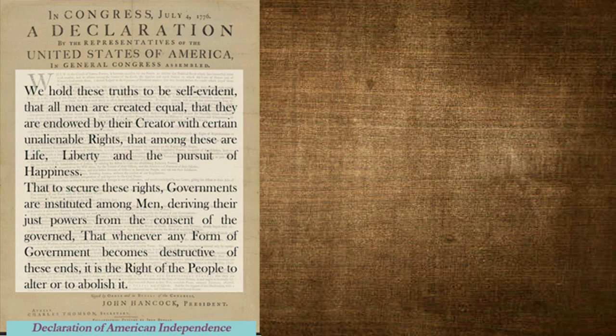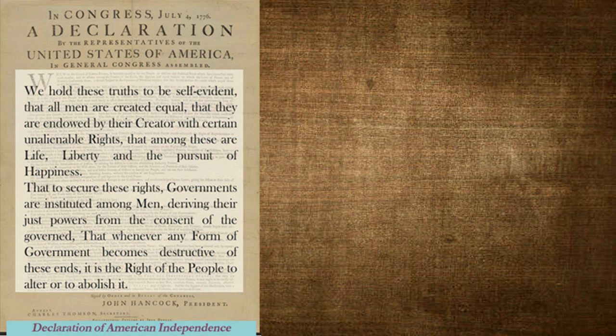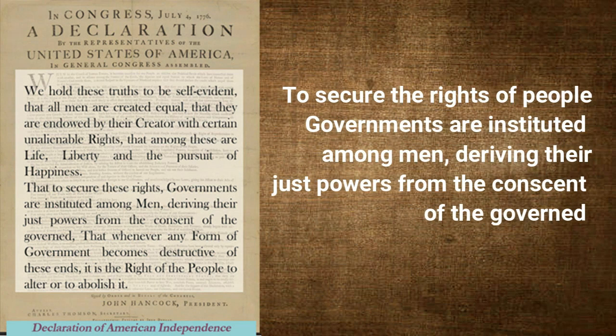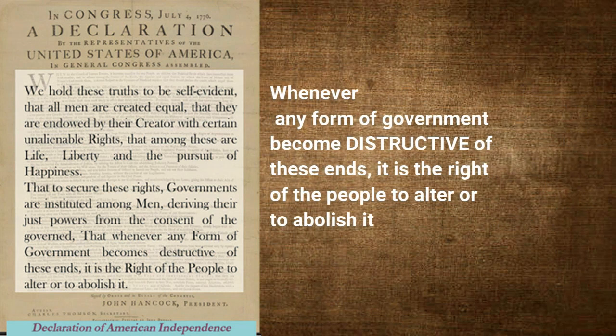An extract of the declaration is given in the textbook. It includes important points: all are equal and everyone has certain rights. It also states that to secure the rights of the people, governments are instituted among men, deriving their just powers from the consent of the governed. And whenever any form of government becomes destructive of these ends, it is the right of the people to alter or to abolish it.